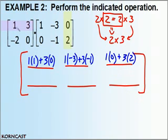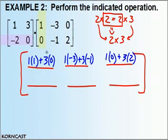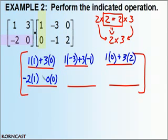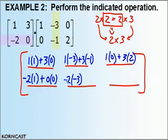Now I need to work on the second row, so I move my pink color strip down to row 2. For row 2, column 1, I move my other strip back to column 1. My product goes in row 2, column 1. First element times first element: negative 2 times 1. Second element times second element: 0 times 0. Add them together. Now row 2, column 2 — move my strip to column 2. Negative 2 times negative 3, then 0 times negative 1. Add them together.